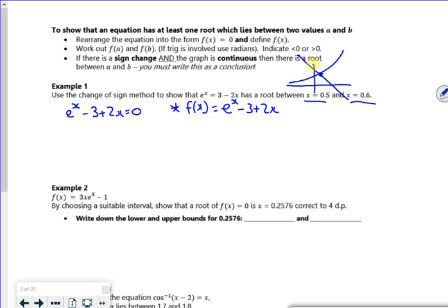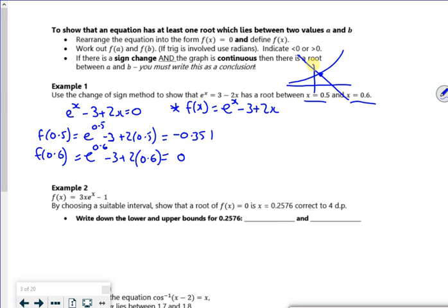So my f of x for this is e to the x minus 3 plus 2x. And I want to show the roots between 0.5 and 0.6. So if I do f of 0.5, so it's e to 0.5 minus 3 plus 2 lots of 0.5. According to this, minus 0.351. And if I try f of 0.6, it's e to the 0.6 minus 3 plus 2 lots of 0.6, which apparently gives me 0.0221. Now there's a sign change there.